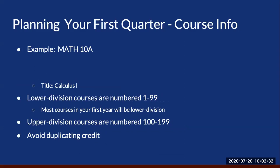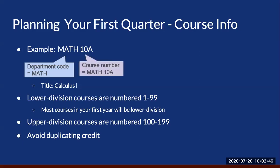When we talk about courses at UC San Diego, here are some basic terms you should know. Let's take MATH 10A as an example. MATH is the department code and 10A is the course number. When courses have a letter suffix at the end like this one, it is often — but not always — part of a sequence of courses you must take in order. So in this case, MATH 10A is followed by MATH 10B and MATH 10C.